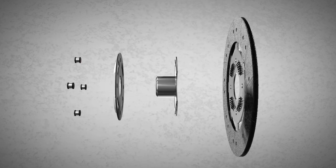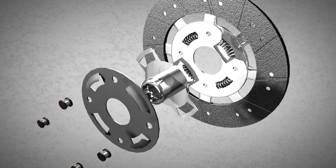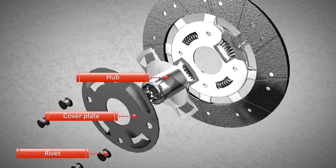The clutch disc is made of several components, of which the important ones are the hub, which is riveted to the disc with a cover plate, and the friction material installed on both sides.